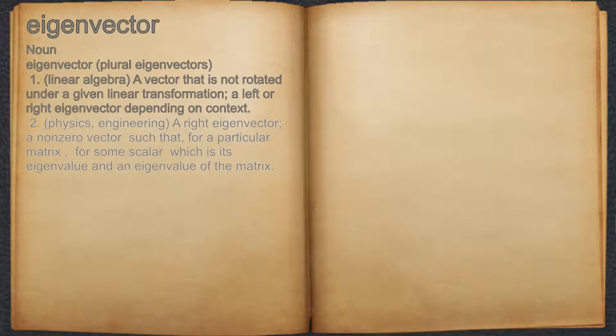2. Physics, engineering: a right eigenvector; a non-zero vector such that, for a particular matrix, for some scalar which is its eigenvalue and an eigenvalue of the matrix.